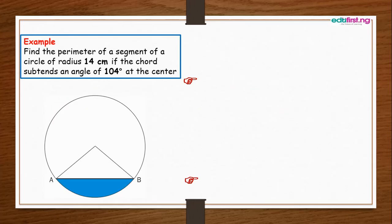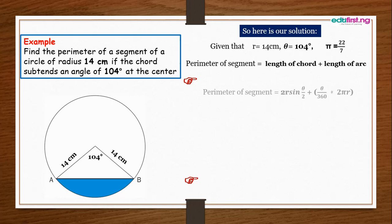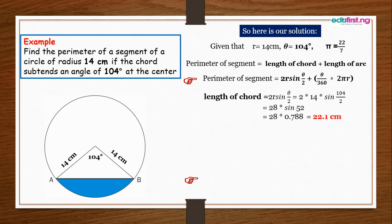Let's do an example. Find the perimeter of a segment of a circle of radius 14 cm if the chord subtends an angle of 104 degrees at the center. Given: r = 14 cm, θ = 104°, π = 22/7. For the length of the chord: 2r sin(θ/2) = 2 × 14 × sin(104/2) = 28 × sin 52°. Sin 52° = 0.788, so the length of the chord = 28 × 0.788 = 22.1 cm.